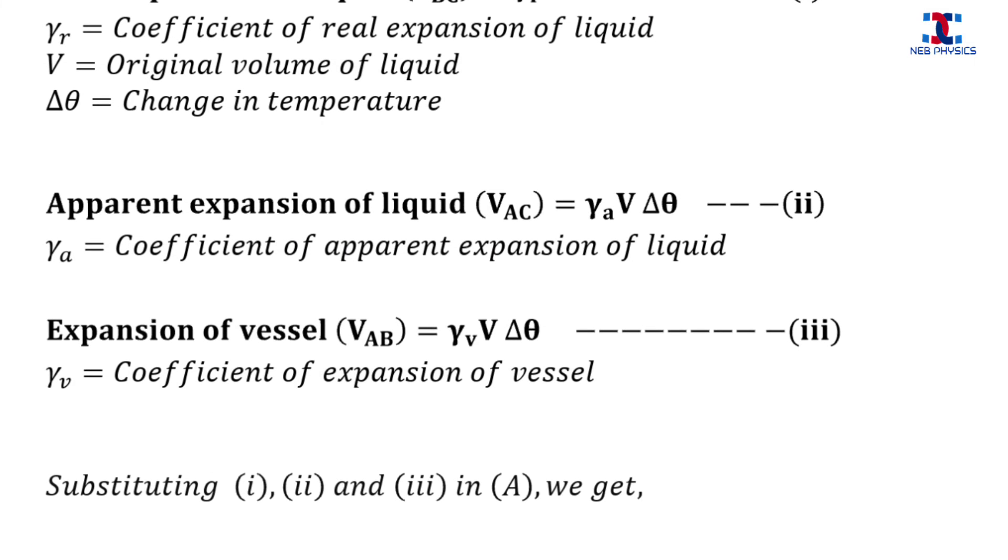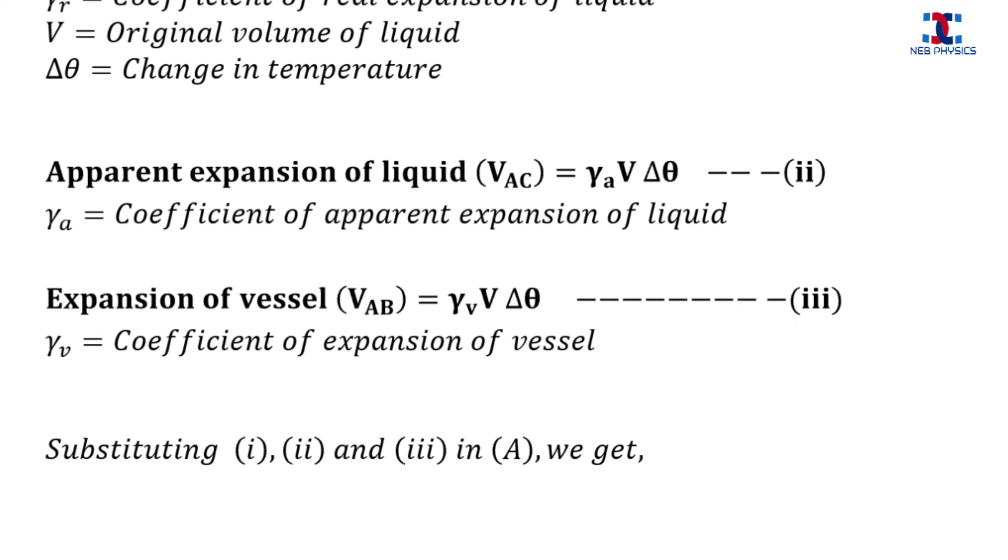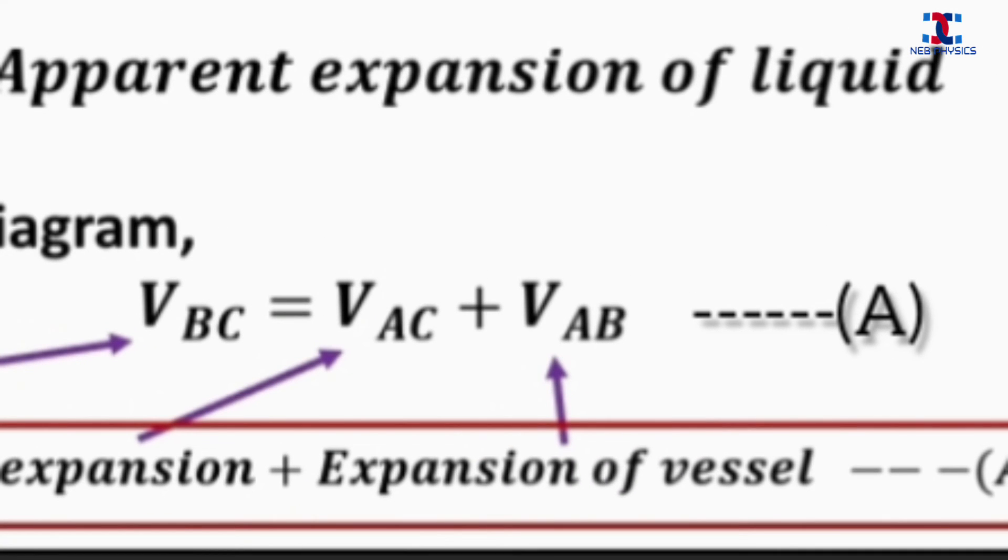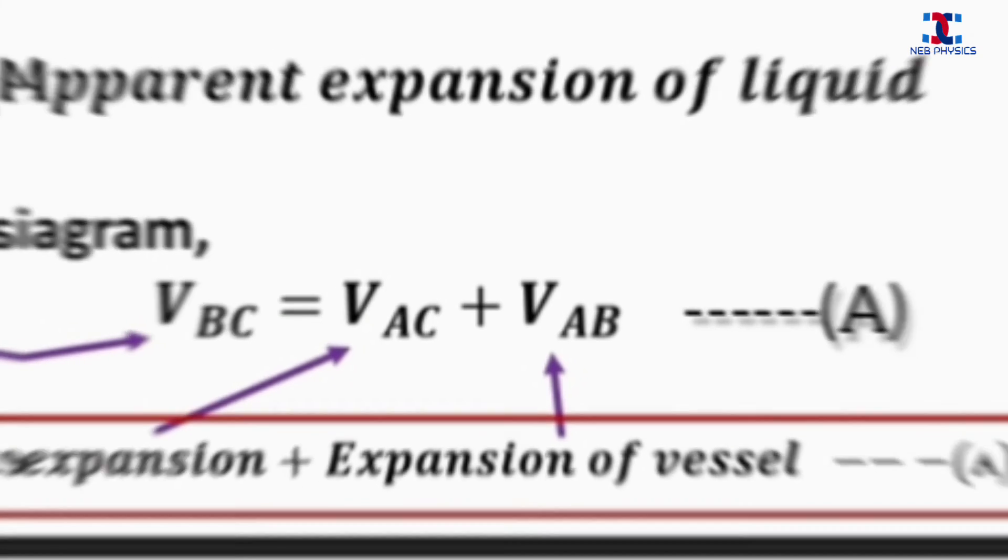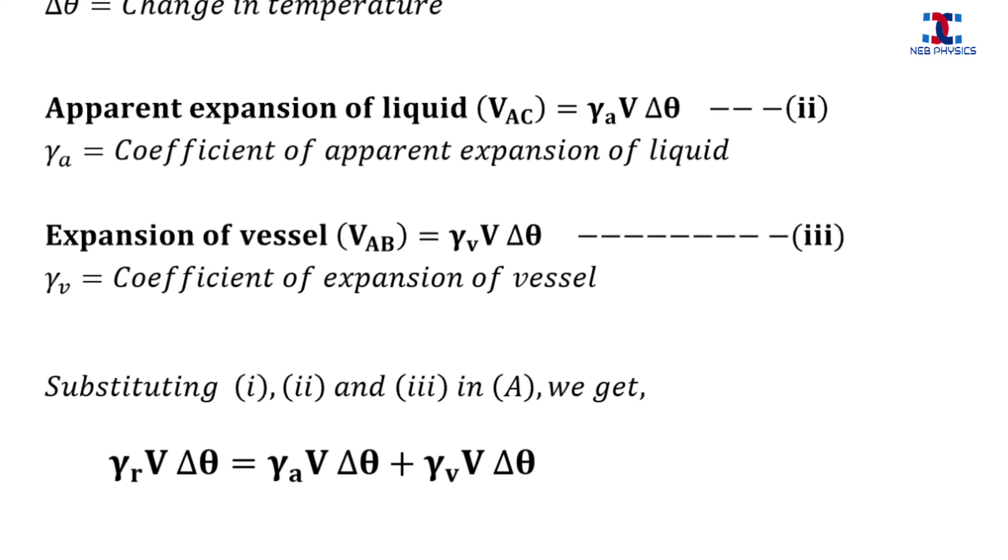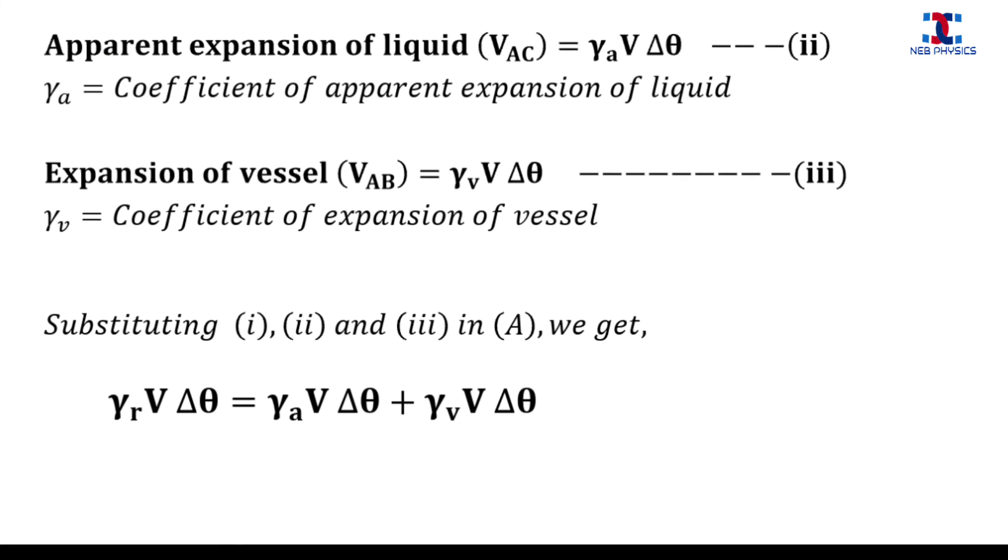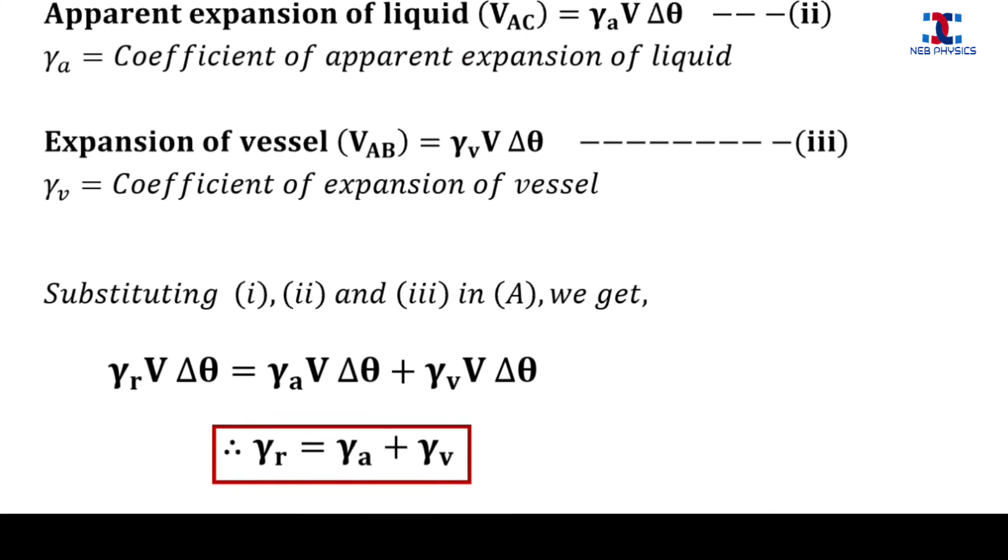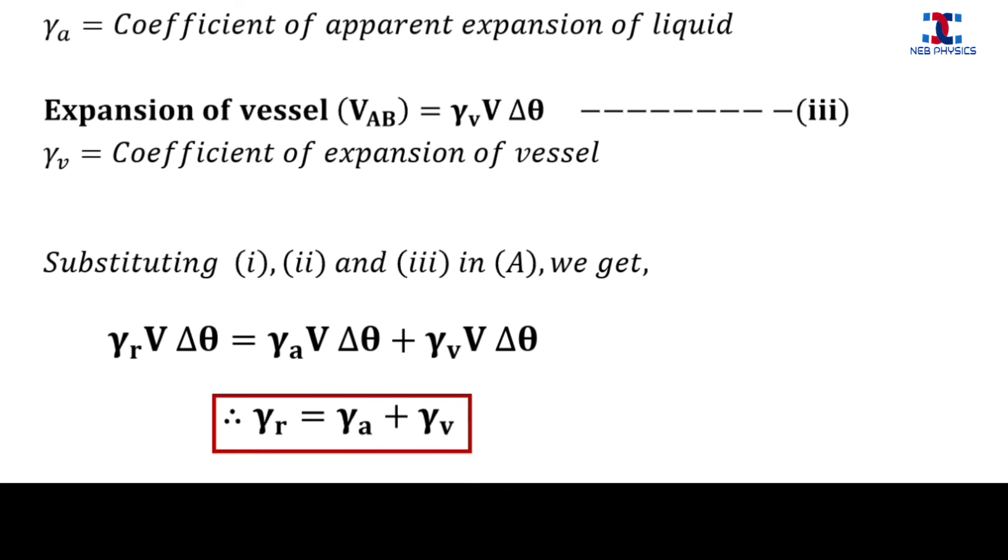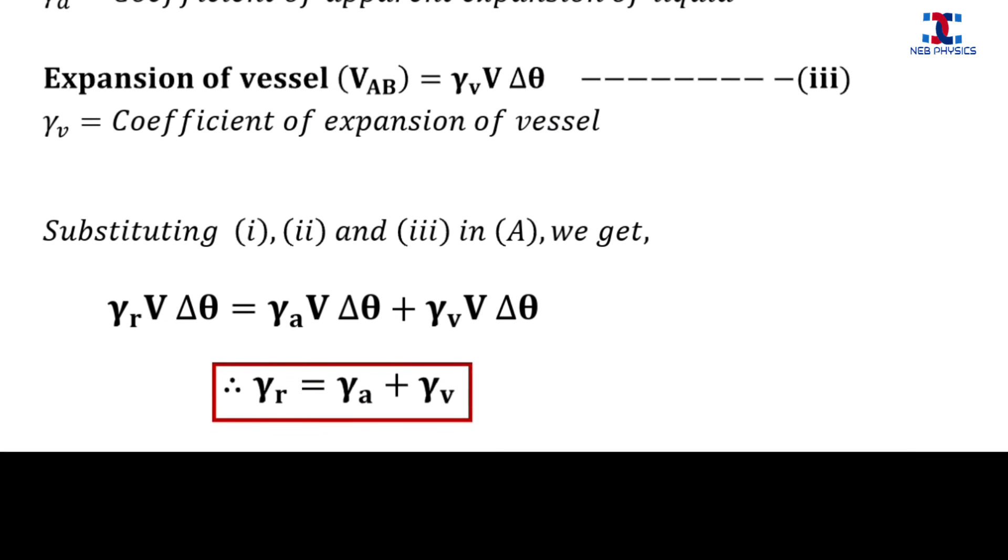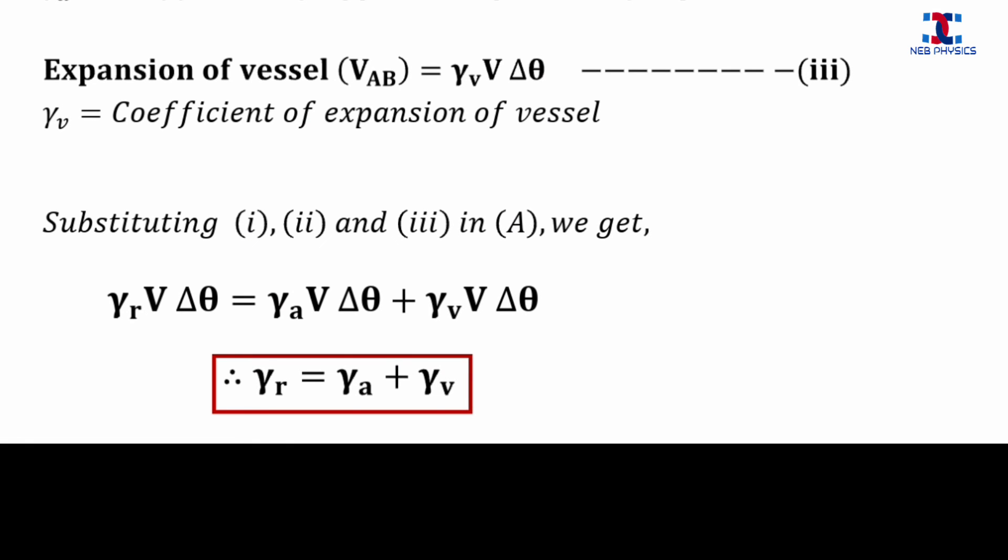When we substitute equations 1, 2, and 3 in equation A, then we get the following expression. And finally, we get γ_R is equal to γ_A plus γ_V. And this is the relation between the coefficient of real and apparent expansion of liquid.